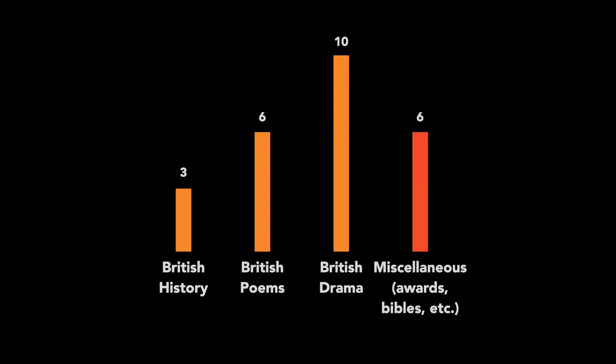British literature in the CUET exam is divided as follows: British history — 3 questions, British poems — 6 questions, British drama — 10 questions, and miscellaneous topics such as awards, pen names, and bibles — 6 questions. Of the 10 drama questions, Shakespeare accounts for 5, and the remaining 5 came from other dramatists like Christopher Marlowe — for example, a question from Dr. Faustus. You also need to study the rhyme scheme of Shakespeare's sonnets and the Petrarchan sonnet.